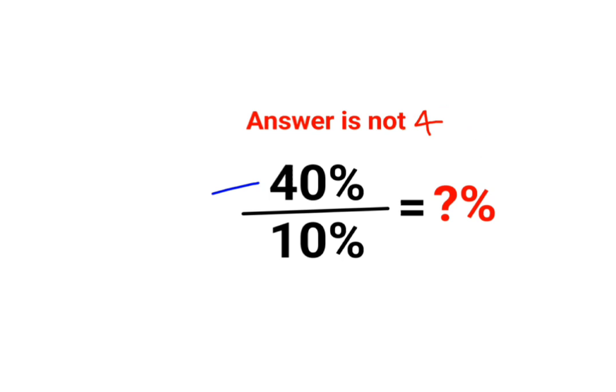Now there is a small error or detail which a lot of people missed. Let's understand what is 40%. See, whenever you have a percent sign ahead of a number, you can convert it into a fraction by dividing that number by 100.